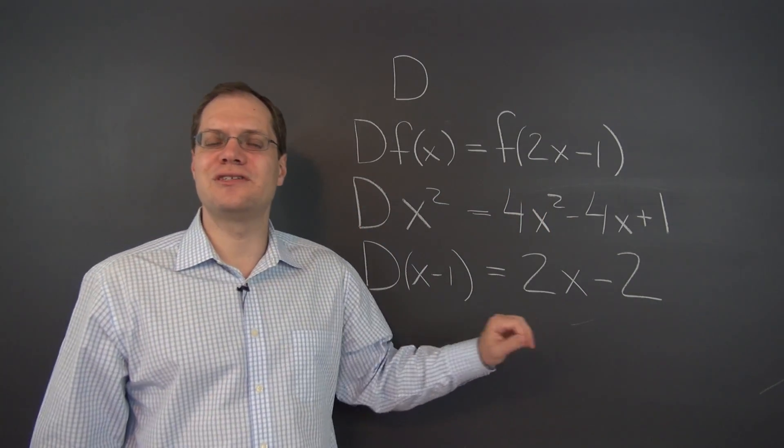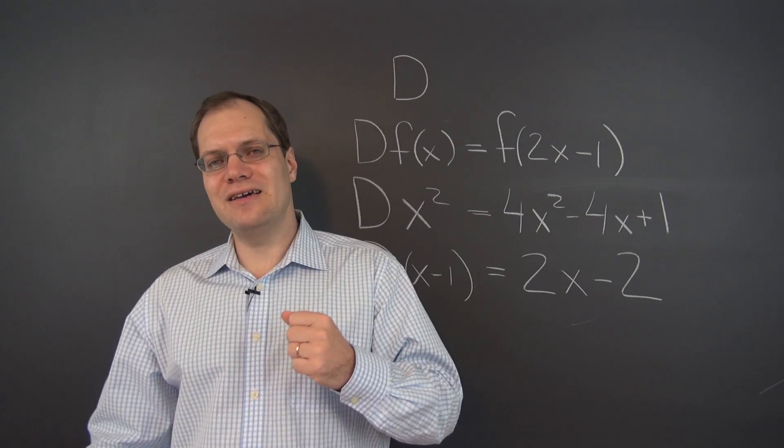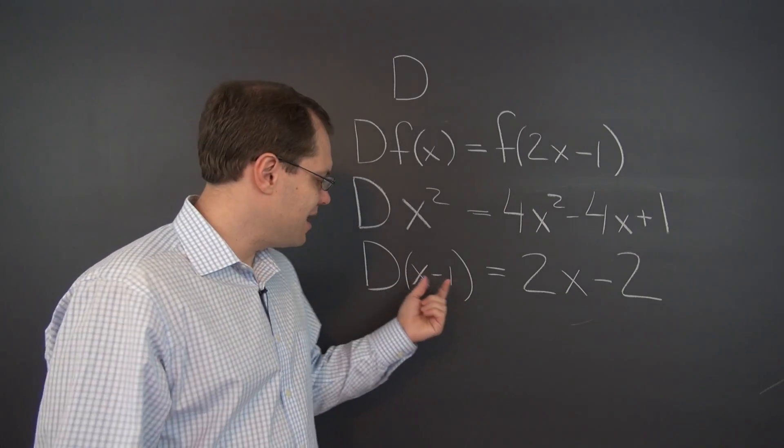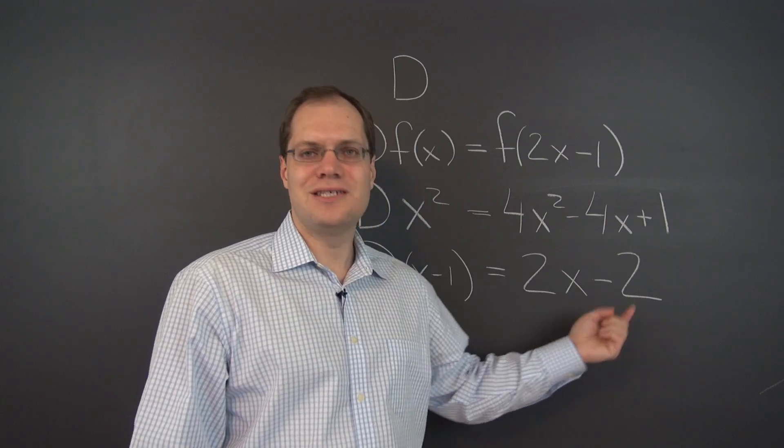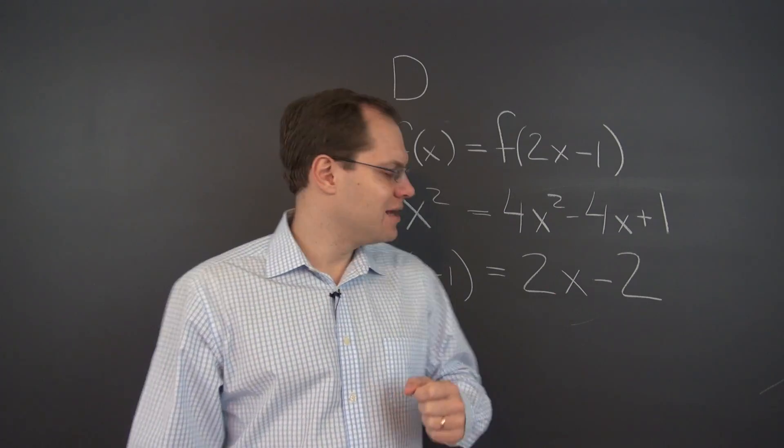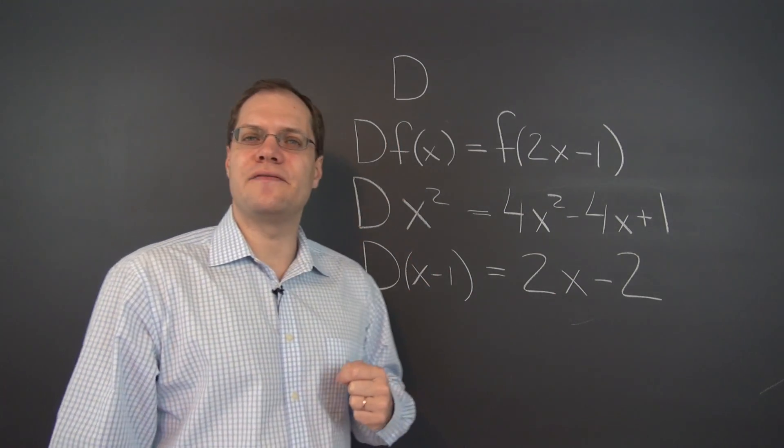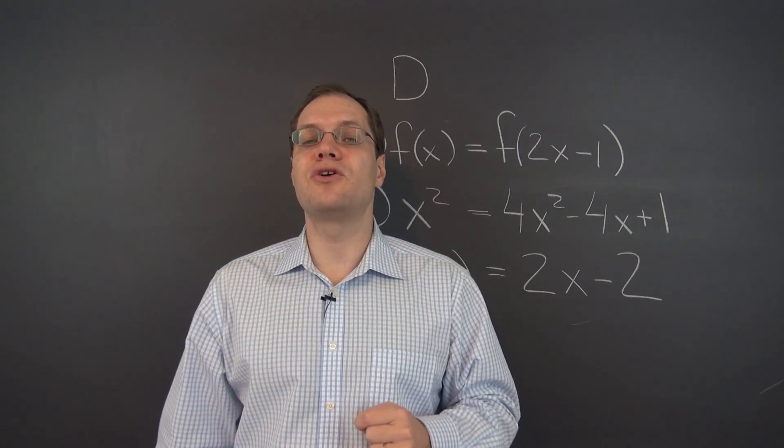And lo and behold, I think we just stumbled upon an eigenfunction of this transformation. x-1 becomes 2 times (x-1), and x-1 is the eigenfunction, and 2 is the corresponding eigenvalue.